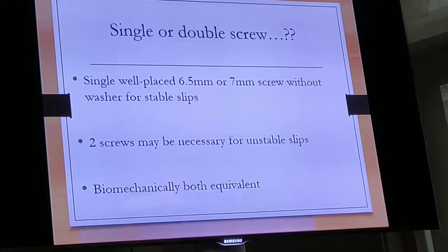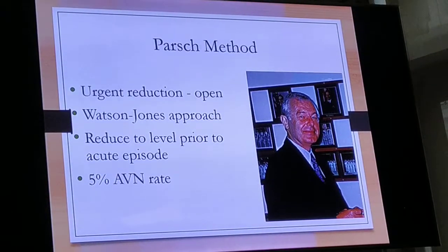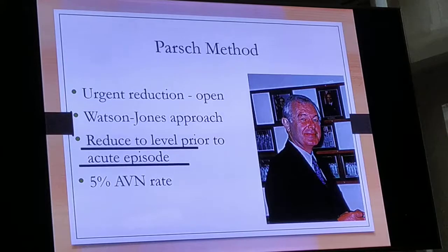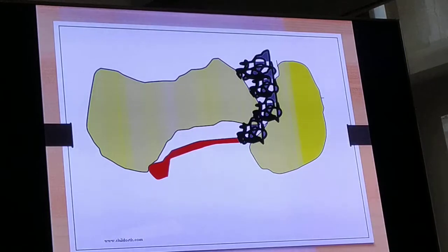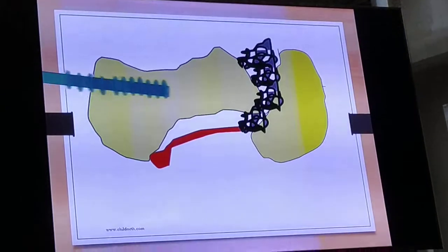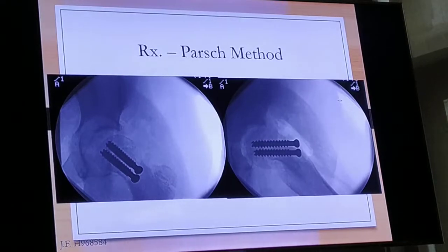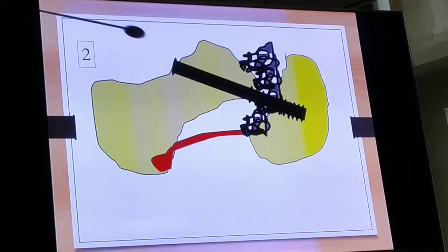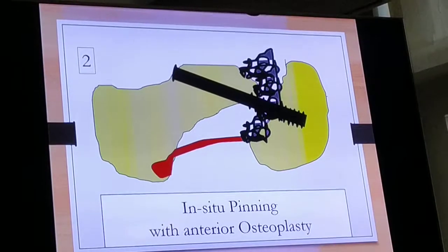Usually in a stable slip a single screw is enough; two screws may be required for unstable slips. There is also the Parsh method for acute reduction, where you perform an anterior capsulotomy, apply a small periosteal lever, and try to reduce only to the level of the acute episode — not to the level of the chronic slip. A second option is in-situ pinning combined with a mini open anterior release with burring to remove the anterior bump, known as in-situ pinning with an anterior osteoplasty.